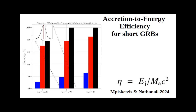Q&A: Regarding simulation dimensionality — the two-neutron-star merger simulations are 3D with some symmetries; the jet propagation simulations are 2D. In 2D, matter piles up on top of the jet and cannot escape laterally, whereas in 3D it can penetrate around the jet. This is a known limitation.